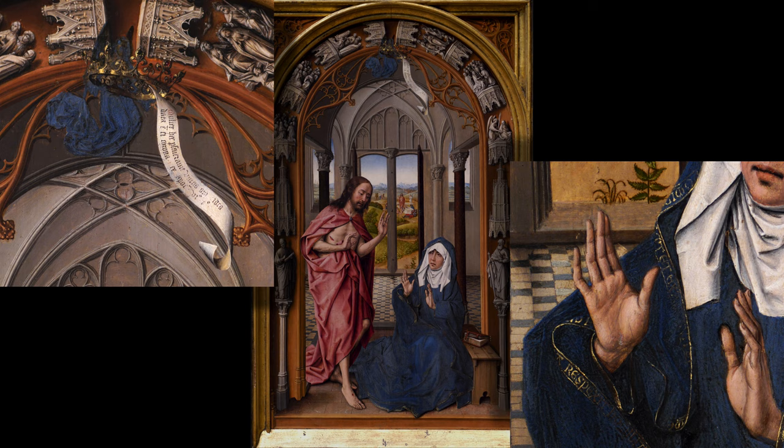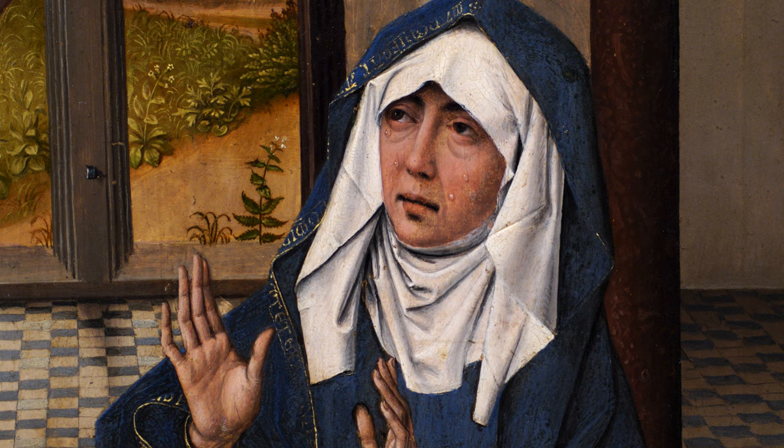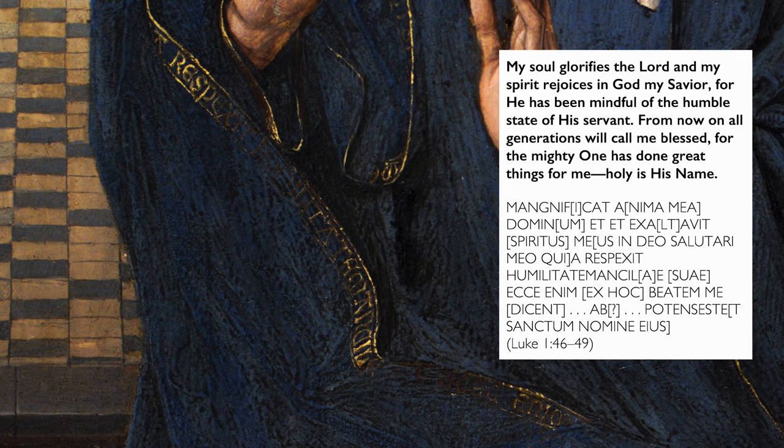There are two inscriptions in this painting that relate to the Virgin Mary. One inscription is along the hem of Mary's garment, and it comes from a passage in the Bible referred to as the Magnificat — which is also the name of the prayer that uses this text — and it's from the Book of Luke.